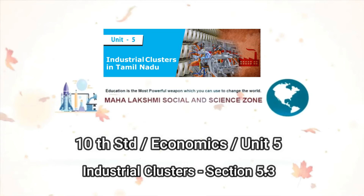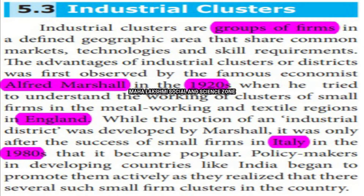In standard social economics, Unit 5 covers industrial clusters in Tamil Nadu. Industrial clusters are groups of firms in a definite geographical area that share common markets, technologies, and skill requirements. These are groups of industries in a specific geographical area where all industries sell in common markets, use the same technology, and share common skills.